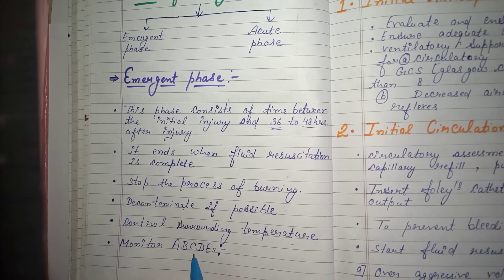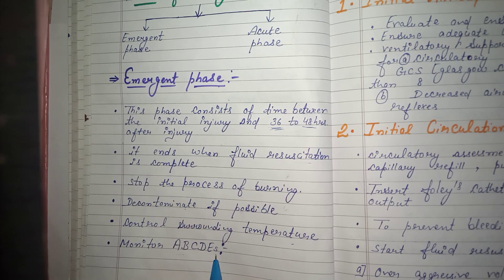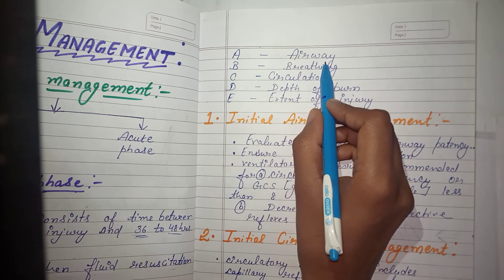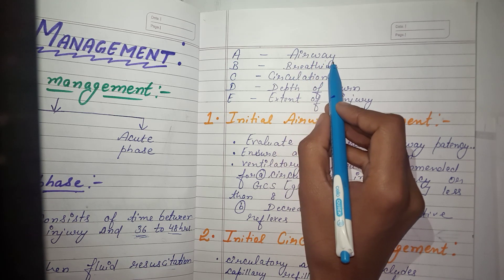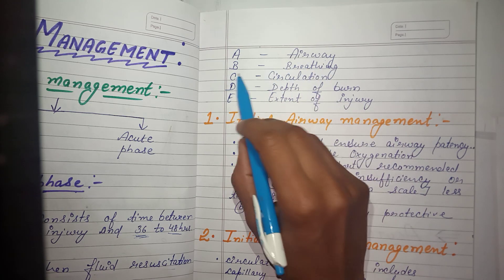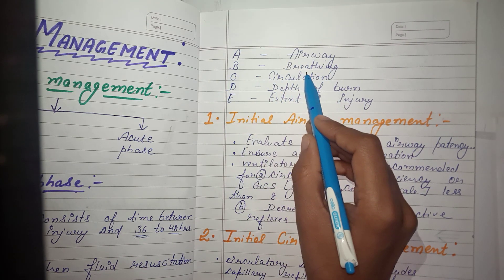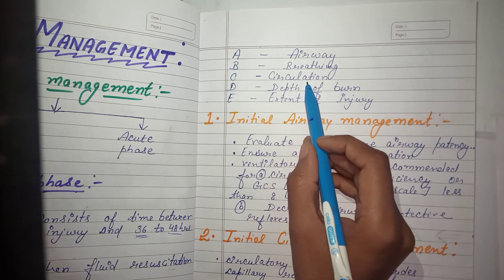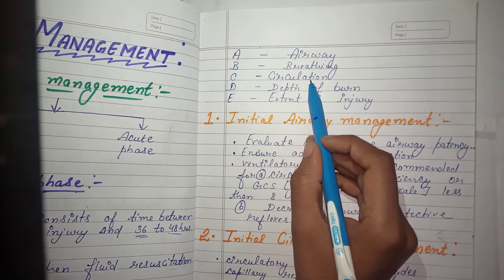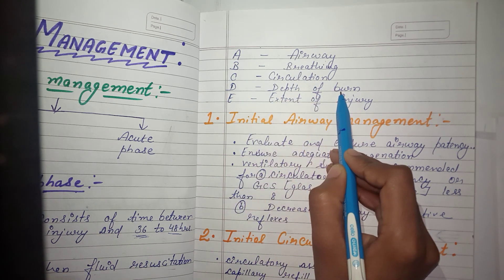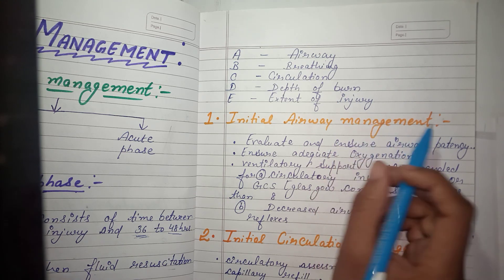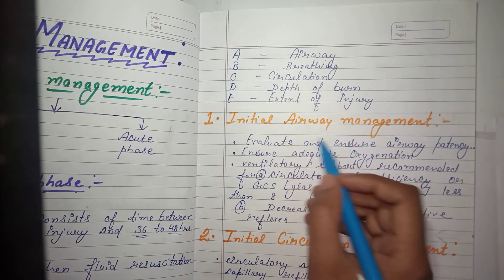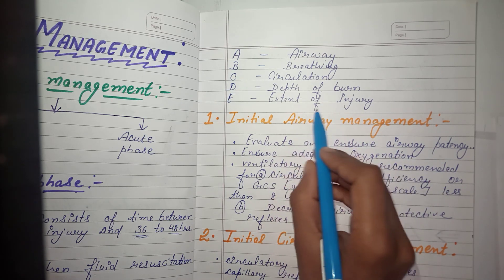The emergent phase also involves monitoring ABCDEs: A refers to airway — checking that the patient has a proper airway and breathing. B is breathing — checking the breathing level. C is circulation — checking the pulse and blood circulation. D is depth of burn — assessing which degree the burn is. E is extent of injury — checking how severe the injury is.